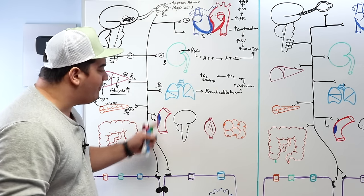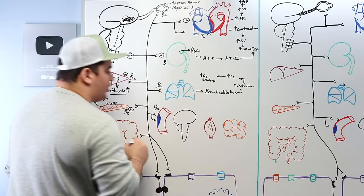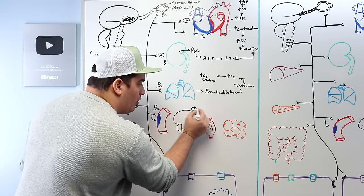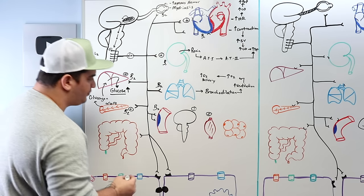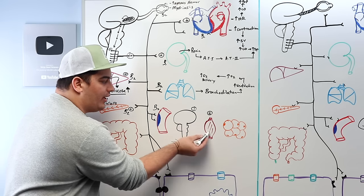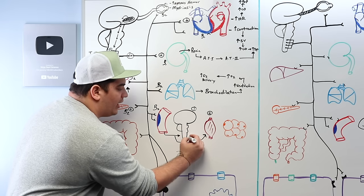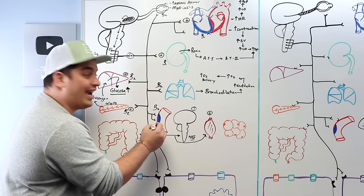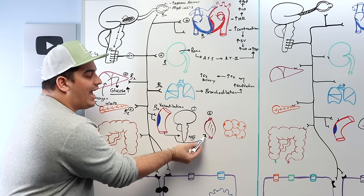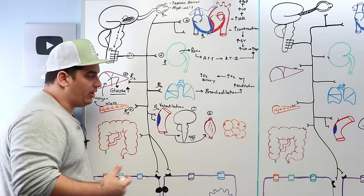There are beta-2 adrenergic receptors on vascular smooth muscle supplying the brain and skeletal muscle. To increase blood flow to these organs, these receptors mediate vasodilation, increasing perfusion through the capillary structures supplying them, thereby delivering more blood, oxygen, and nutrients so they can perform better during a fight-or-flight response.